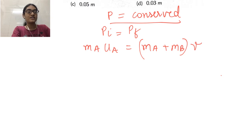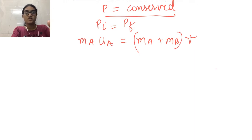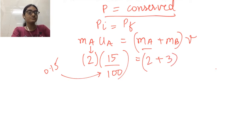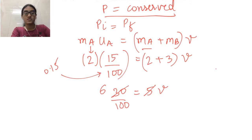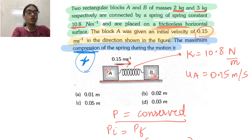Substituting values: MA is 2 kg, MB is 3 kg, UA is 0.15 meter per second (written as 15/100). So 2 into 15/100 equals (2 plus 3) into V, giving 30/100 equals 5V. Therefore V equals 0.06 meter per second. Both blocks move forward at this common velocity.